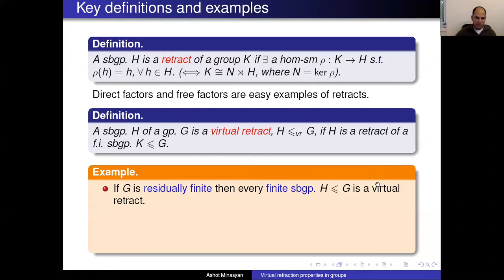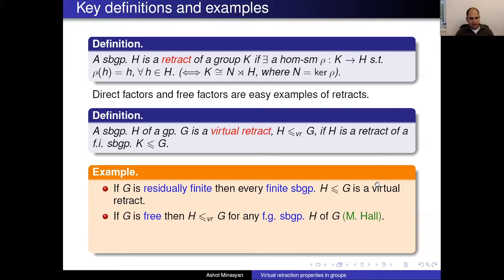The other basic example: if G is free, then Marshall Hall's classical theorem says that every finitely generated subgroup of a free group is a free factor of a subgroup of finite index. Since free factors are retracts, it follows that every finitely generated subgroup of a free group is a virtual retract.